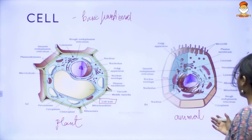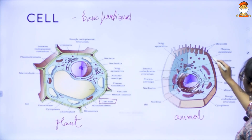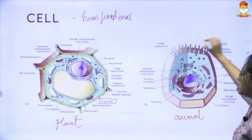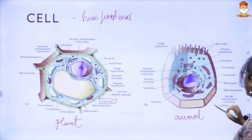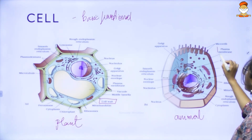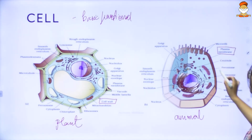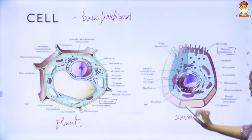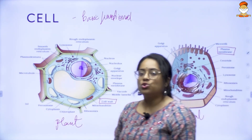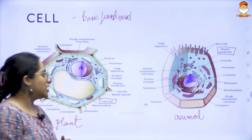As compared to the animal cell, that cell wall is not present. The most outer layer is just covered by something called your plasma membrane, and inside your plasma membrane is where all the things are contained. So that is the very first difference.